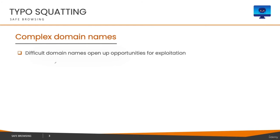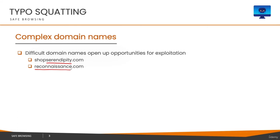Certain things can make typo squatting easier or more difficult. If you have difficult domain names, that opens up more opportunities for exploitation because it's harder for humans to remember and type long names correctly. For example, shopserendipity.com has a good chance of being mistyped. Another example is reconnaissance.com — 'reconnaissance' is a French word meaning gathering information while staying safe. These kinds of domains are really difficult to type, with many ways to miss an 'n' or an 's'.